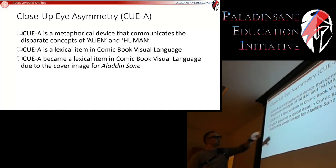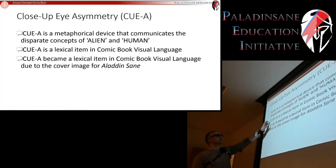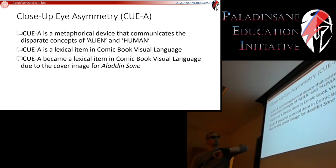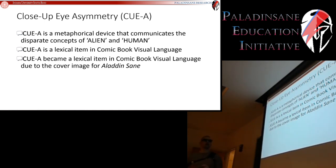The last piece of this puzzle is to argue that close-up eye asymmetry became a lexical item in comic book visual language specifically due to the cover of Aladdin Sane. You can trace it back to that one single cover.